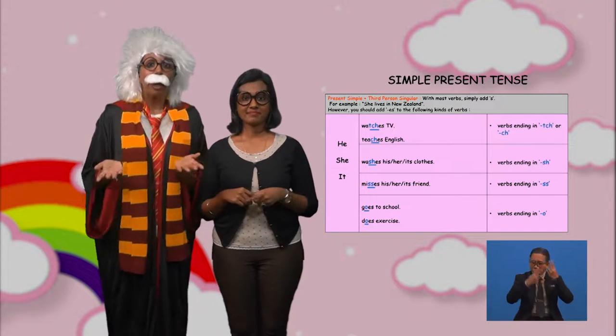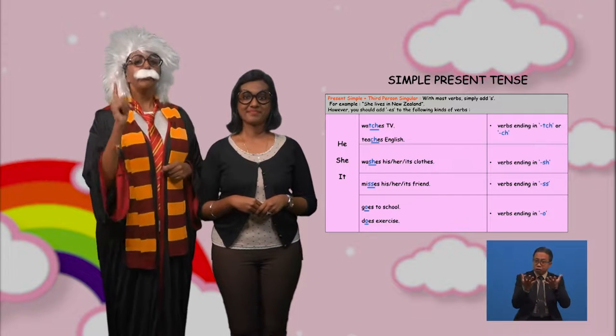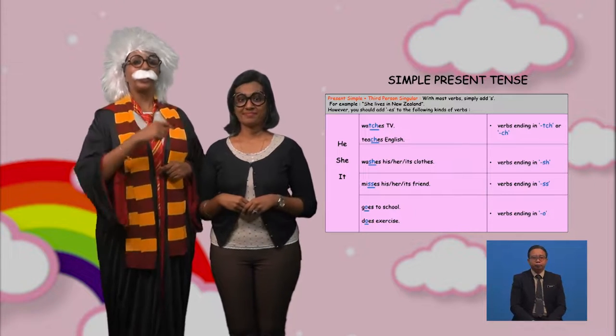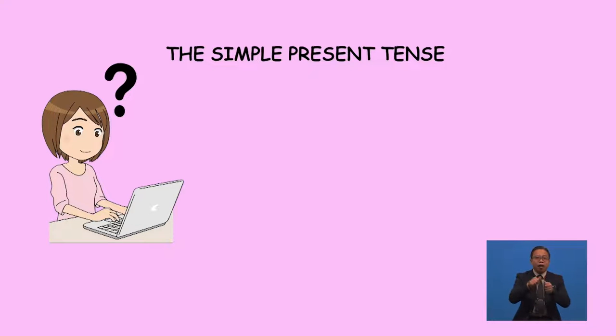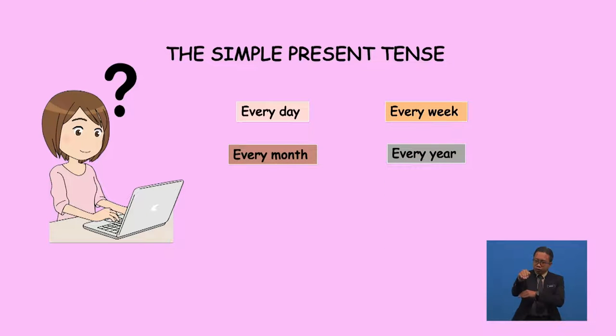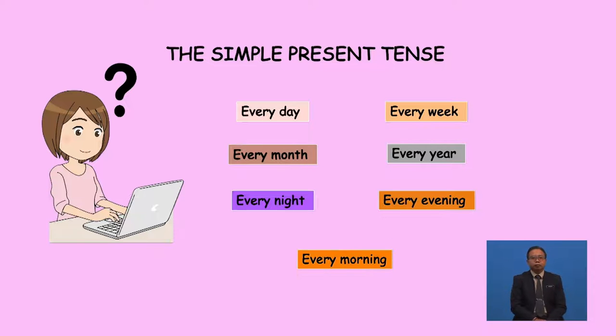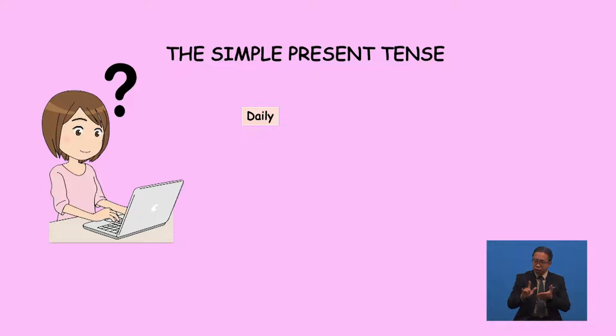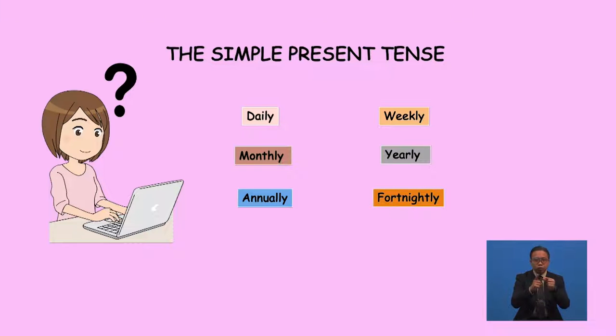How are you doing so far? Don't worry. If you do a lot of practice, I'm sure you'll get the hang of it. Still remember the six key words to identify present tense sentences? Here are some others too: every day, every week, every month, every year, every night, every evening, and every morning. Then words like daily, weekly, monthly, yearly, annually, and fortnightly. When you come across these words in a sentence, remember to use simple present tense.